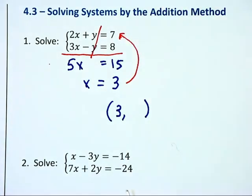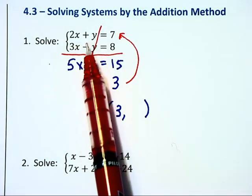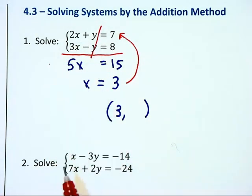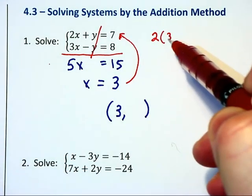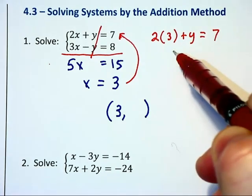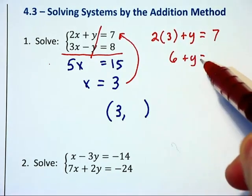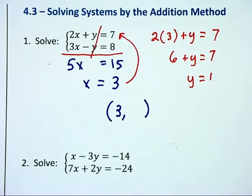I think the top equation is the best one to choose because we have a 1y by itself and we don't want to have that negative in front of the y which we see in the second equation. So the first equation will become 2 times 3 plus y is equal to 7 and that's 6 plus y equals 7 and therefore y equals 1 and our solution to this system is 3,1.